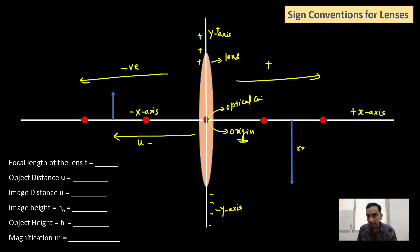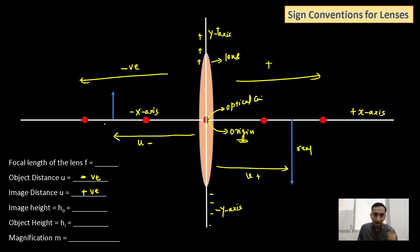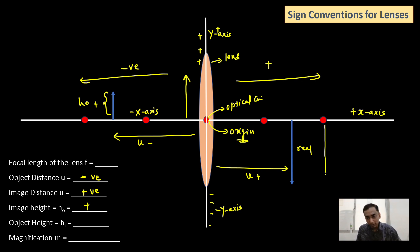Image distance for a real image is v, which is measured on the right side, so it is positive. Object distance is negative. Height of the object is measured along the positive y-axis, so it turns out to be positive. In case of a real image, you measure the height downwards along the negative y-axis, so the answer will be negative.